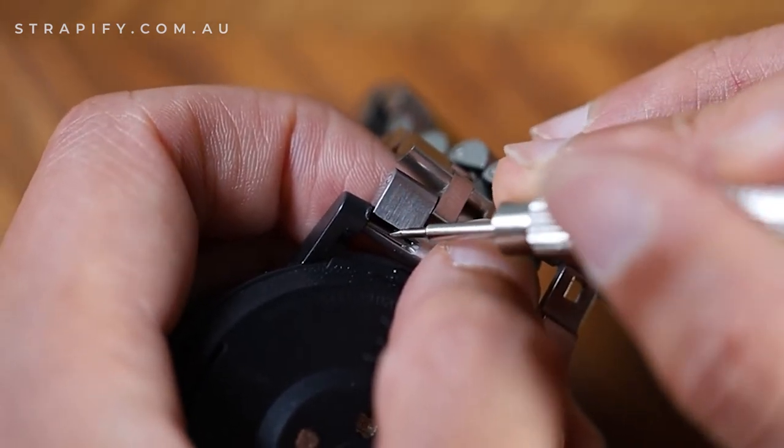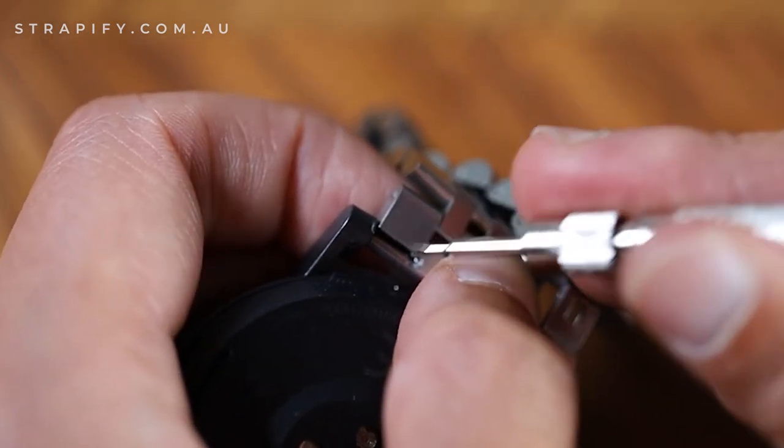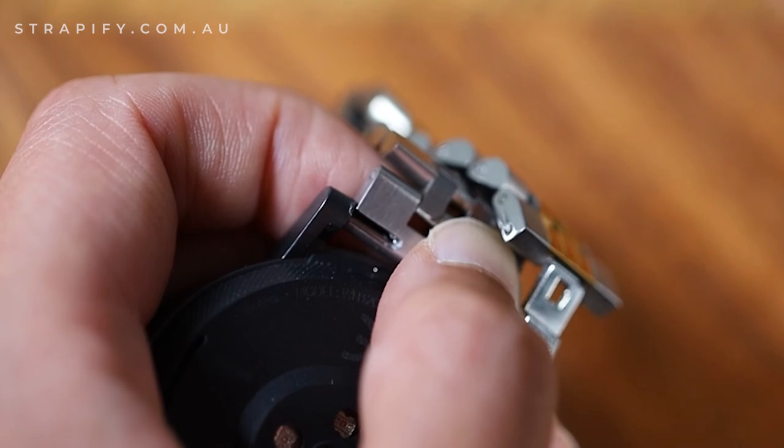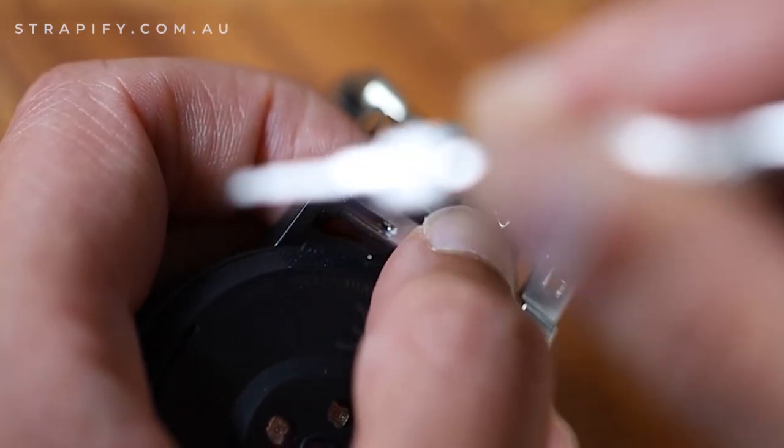The spring bar rotates using friction, so we need to make sure we're putting enough pressure using the pin or spring bar tool. We're going to try and swipe downwards but also sideways at the same time.